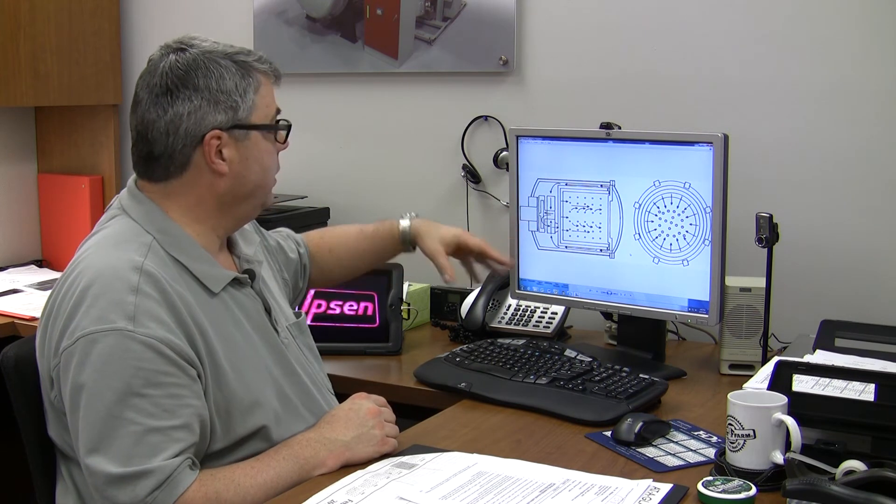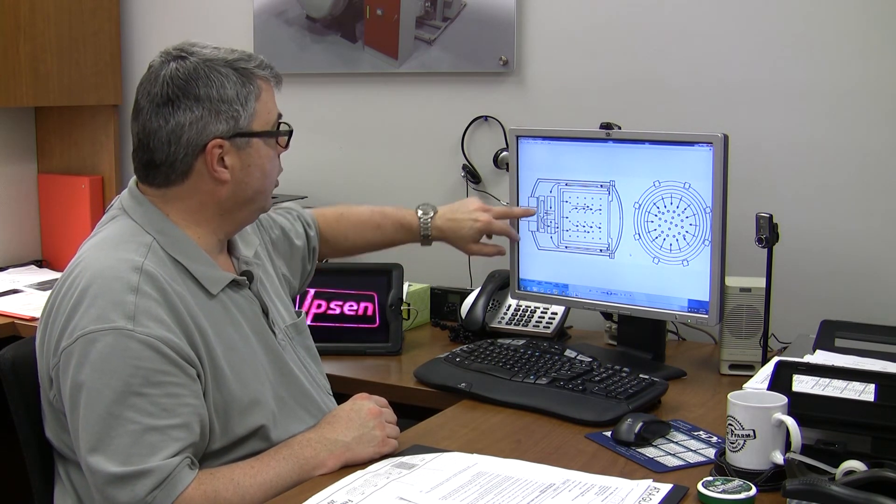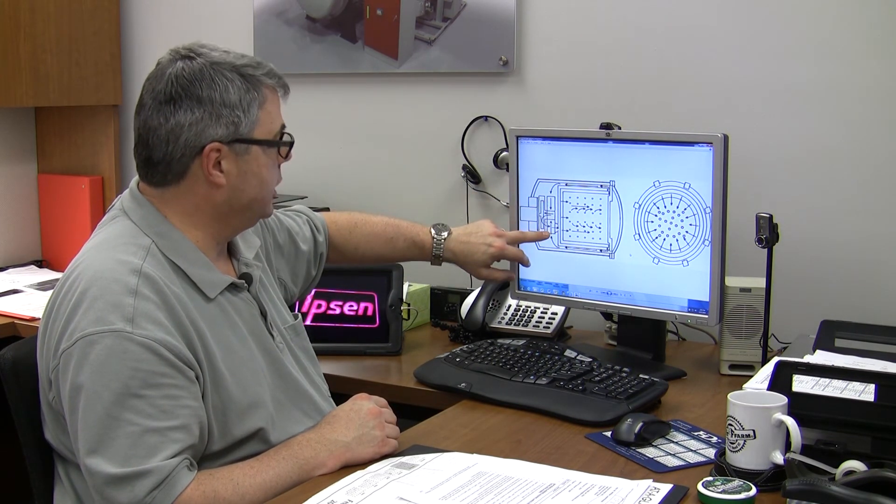So in the turbo treater and the Titan is similar, just the gas flow patterns are different. The picture we have here is a turbo treater. We can see that we have the cooling motor, the fan, and then the heat exchanger in the back.